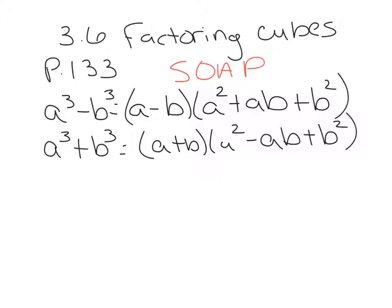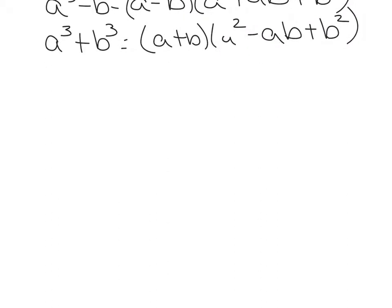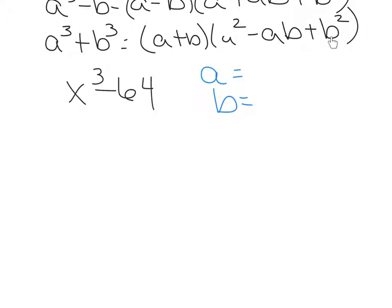Example 1: factor x cubed minus 64. This is the difference of cubes — we know that because 64 is 4 times 4 times 4, which is 4 cubed. When factoring cubes, your first job is to assign a and b, since the formulas are written in terms of a and b. You assign a as the cube root of the first term: what number cubed gives you x cubed? That would be x. And b is the cube root of the second term: what number cubed gives you 64? That would be 4.